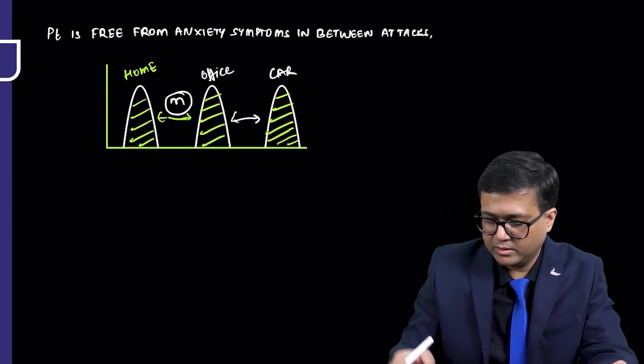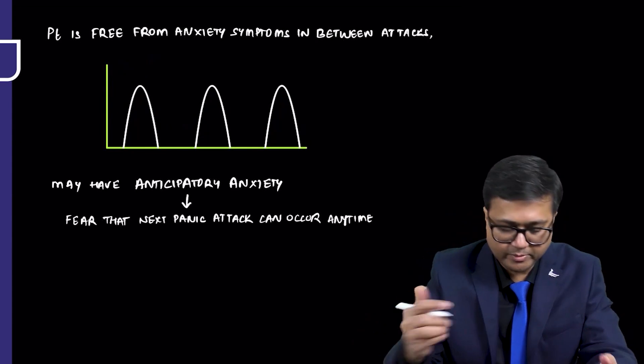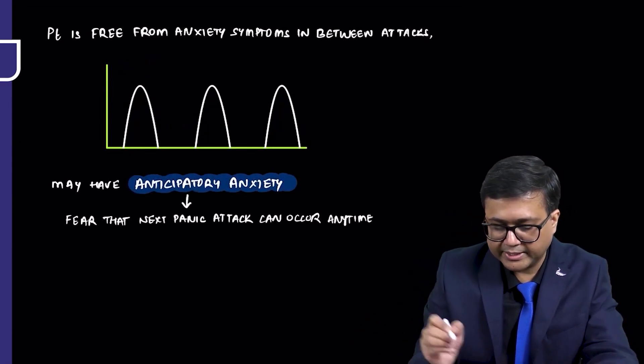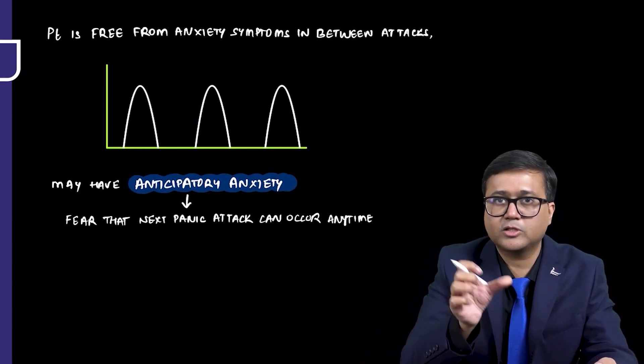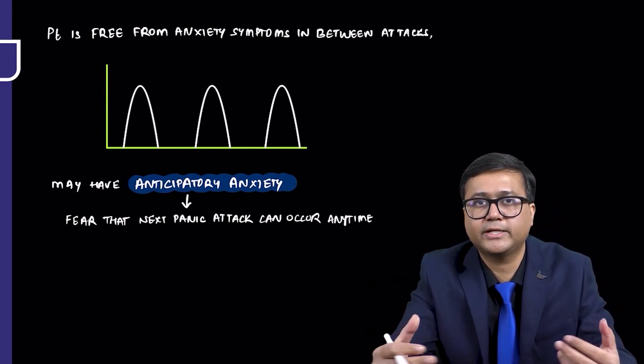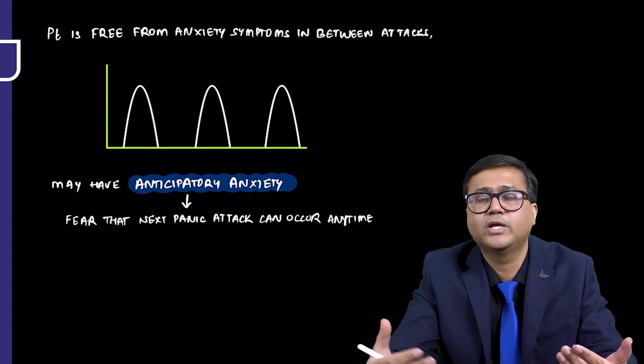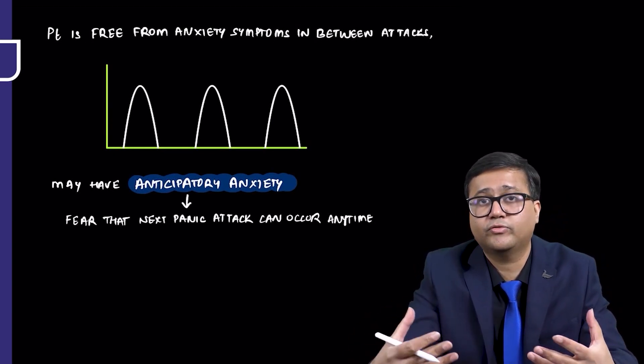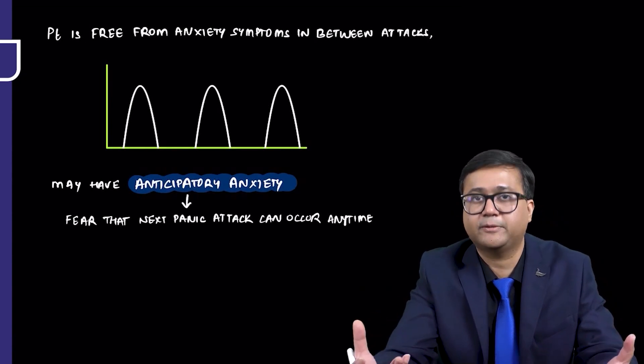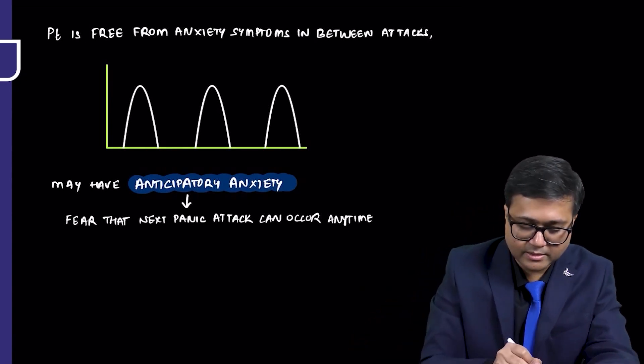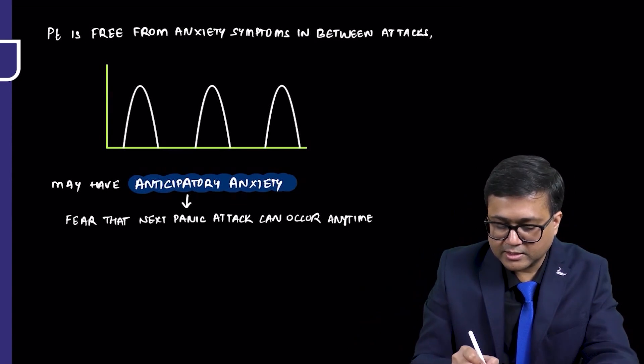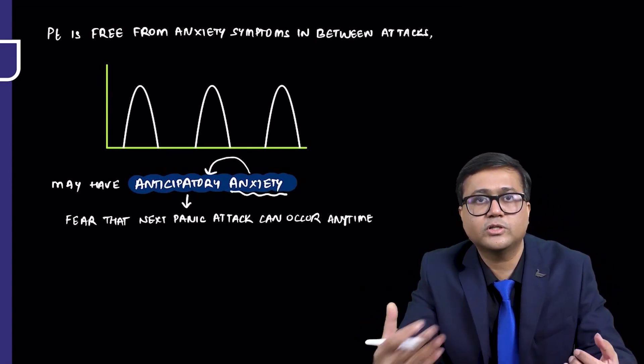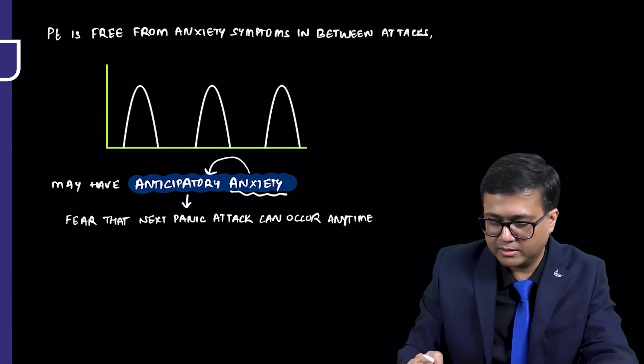Also, in between, patient may have what is known as anticipatory anxiety. In between this normal phase when there is no anxiety, patient may sometimes complain of anticipatory anxiety. That means they may fear that what if next panic attack may occur anytime. This is basically, as the name suggests, anxiety in anticipation of another attack. This may occur in patients with panic disorder.